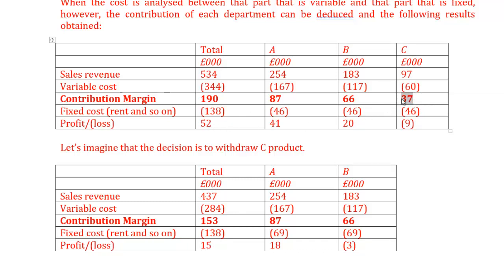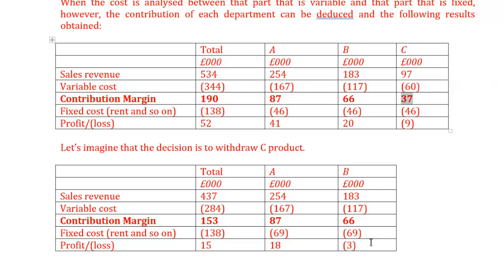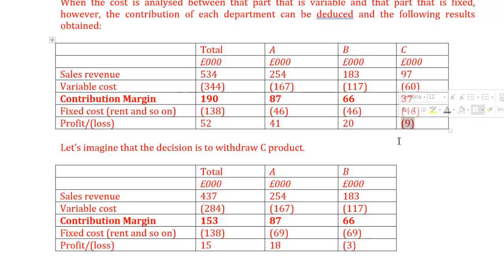Using the calculator: £52 − £37 = £15, which confirms the contribution margin that C adds to profit. So the decision is not to cancel C — continue producing it, because it helps cover fixed costs even if it shows an overall loss. This is the main benefit of management accounting: it helps you make the right decision. Anyone else might choose to stop producing C because it shows a loss — but that is incorrect, because it adds £37 to profit.